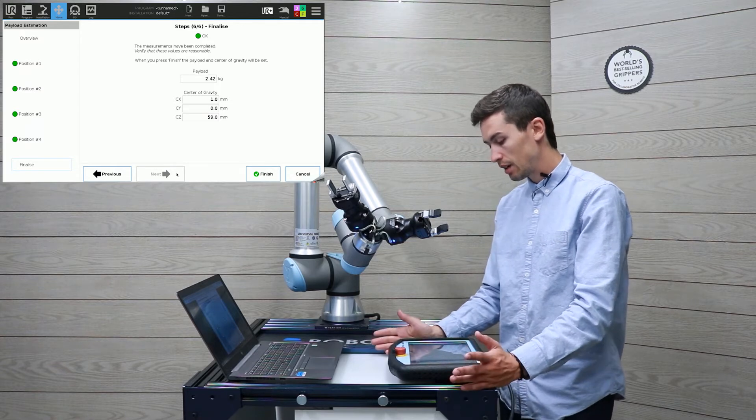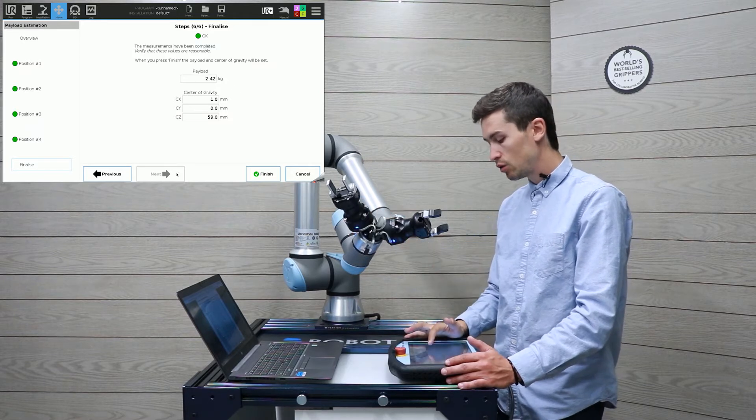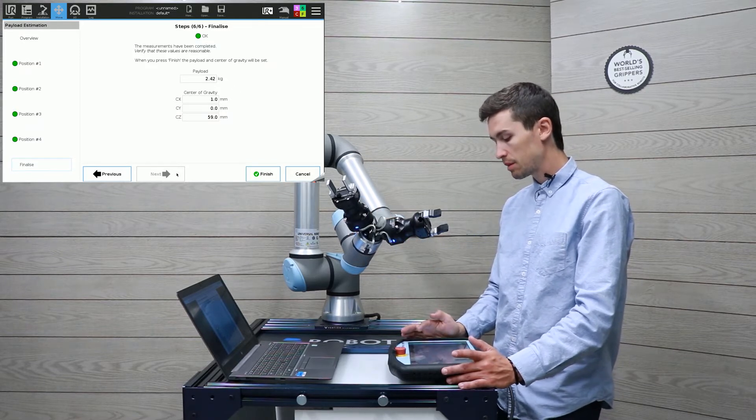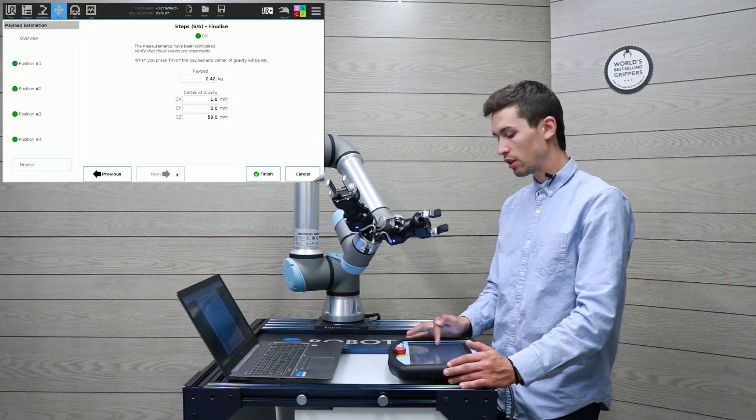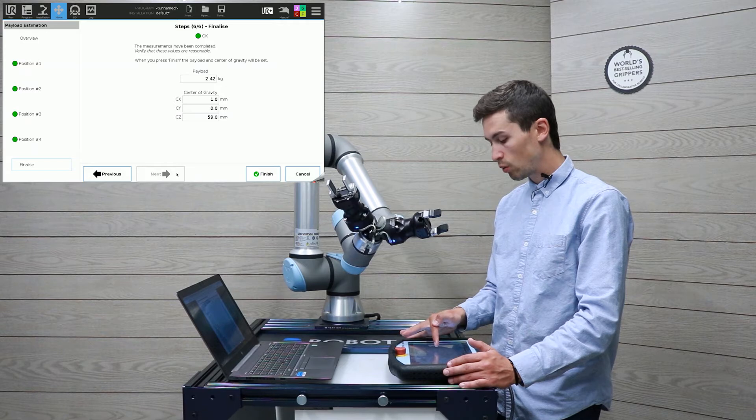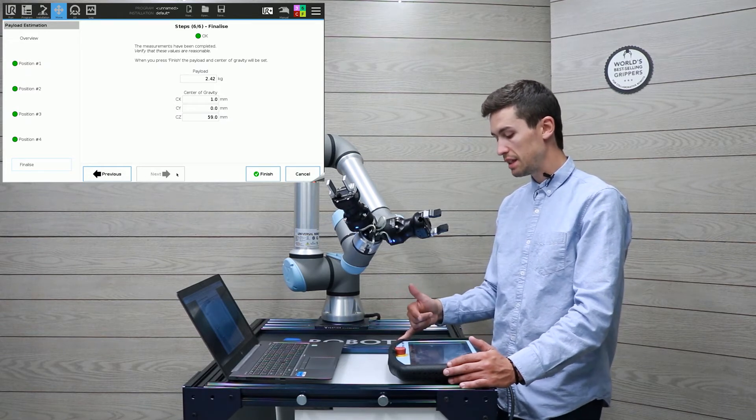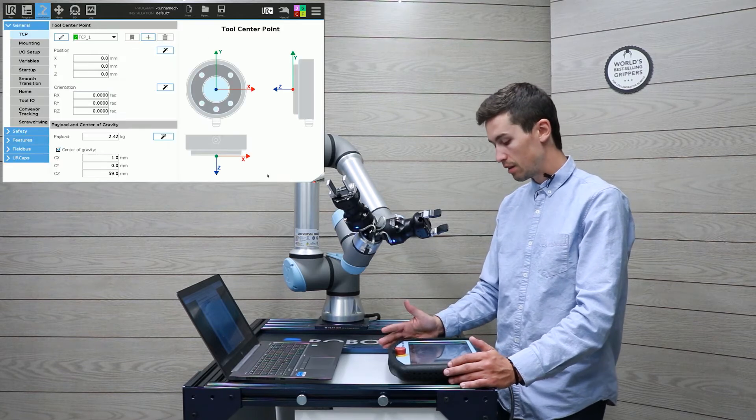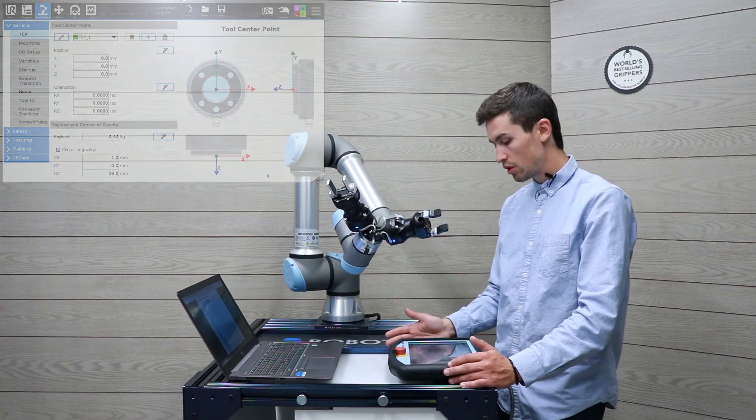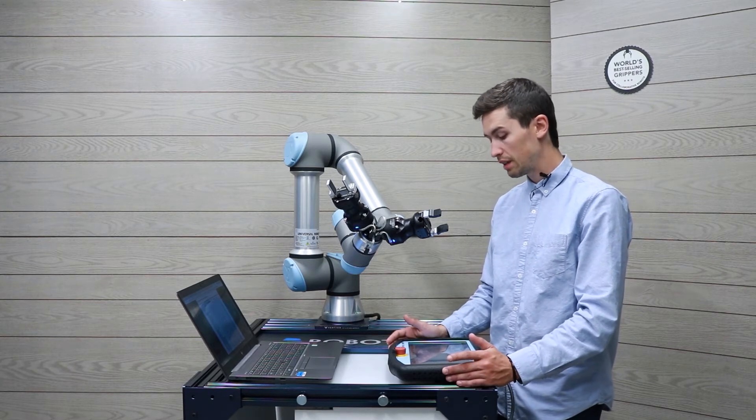So the payload of the dual gripper setup is 2.42 kilograms. You can see that the center of gravity is one millimeter in the X direction, zero in the Y direction, and Z is 59 millimeter. So that's it for the payload setting.